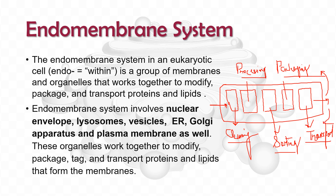Just like that factory, the endomembrane system inside a cell helps in modifying, packaging, and transporting proteins and lipids to their destination. The endomembrane system in a eukaryotic cell is a group of membranes and organelles that work together to modify, package, and transport proteins and lipids.